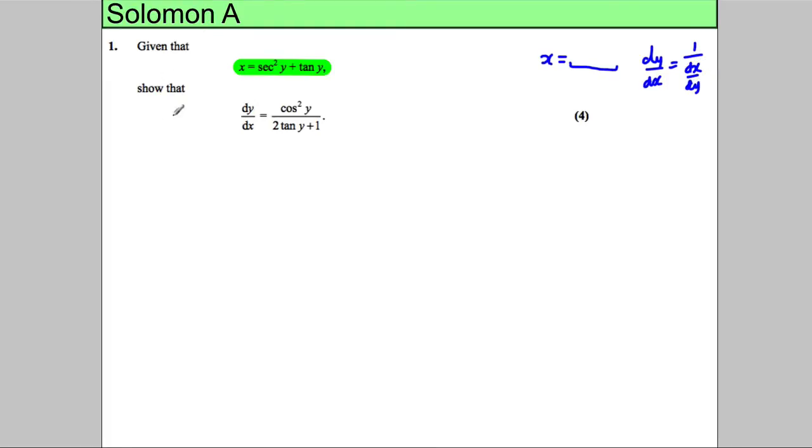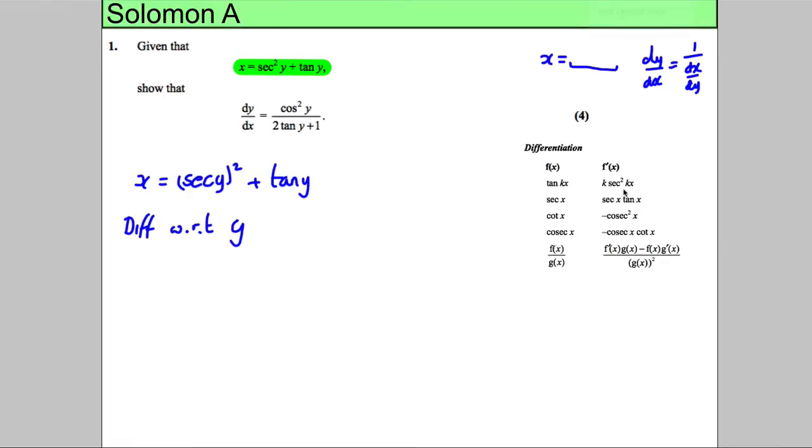Tell the examiner what you're doing. You've got x equals sec squared y plus tan y, and tell the examiner that you're going to differentiate with respect to y. Now there are two different parts of this, and I'm going to make sure you've got your formulas from the formula booklet. It tells you how to differentiate sec and how to differentiate tan, so we've really got everything we need.